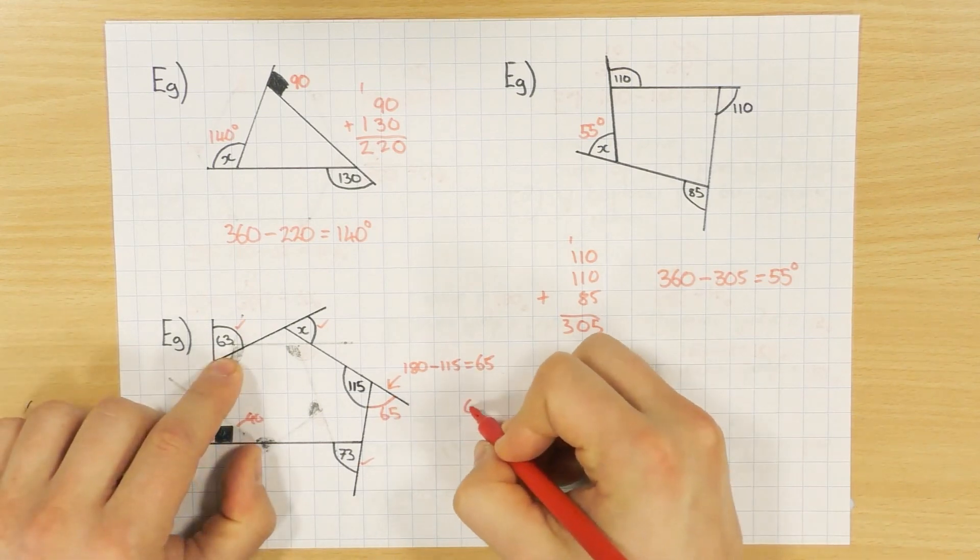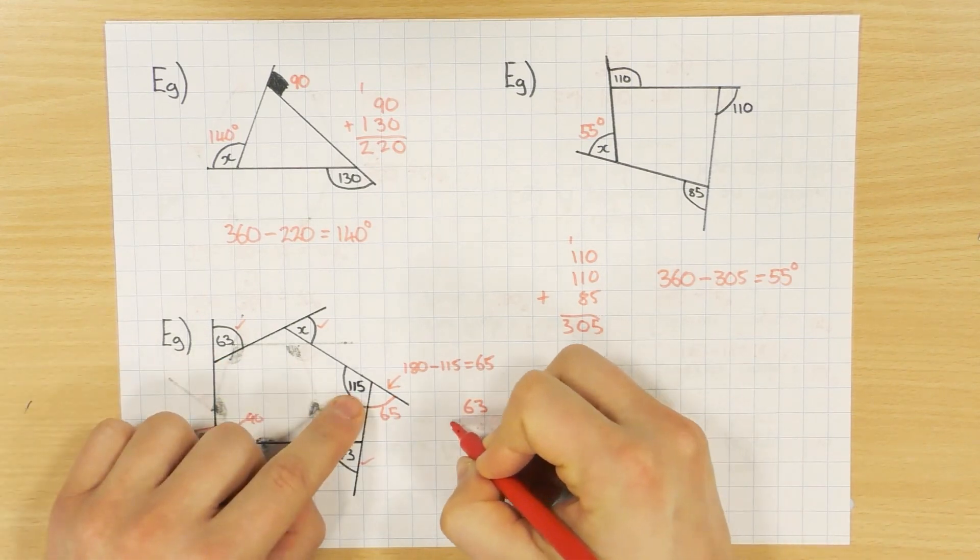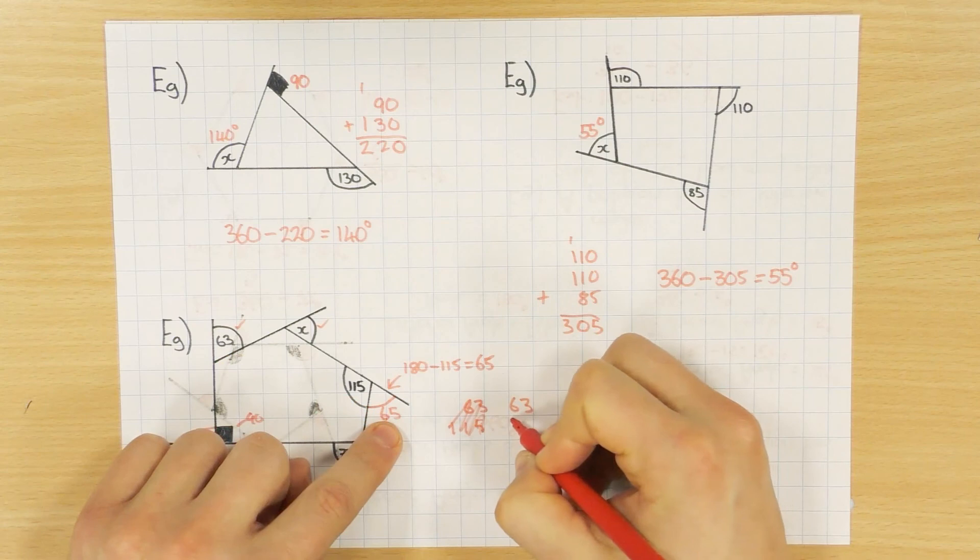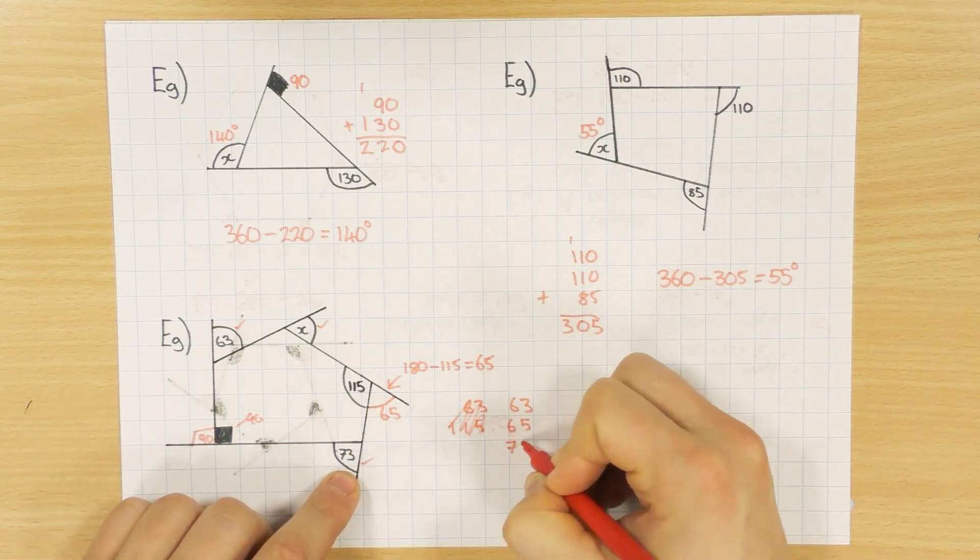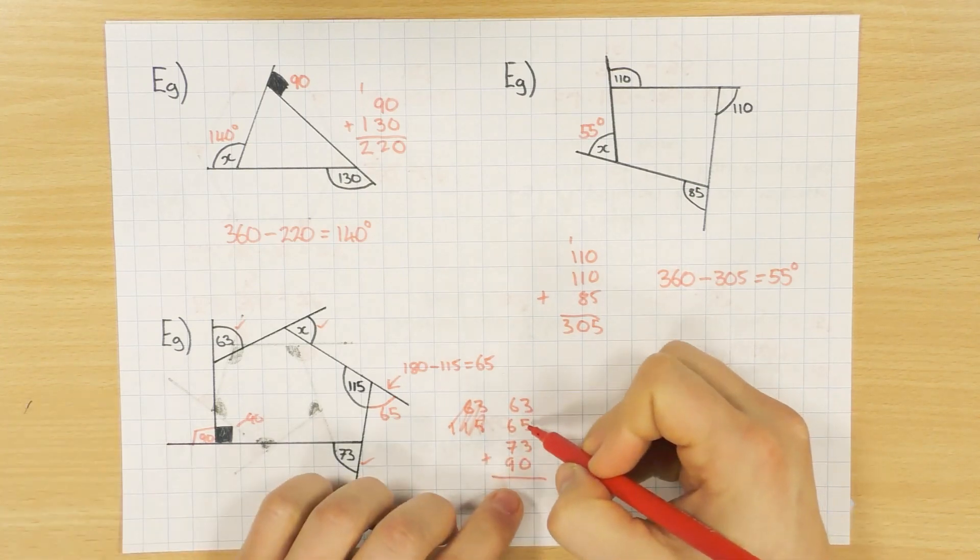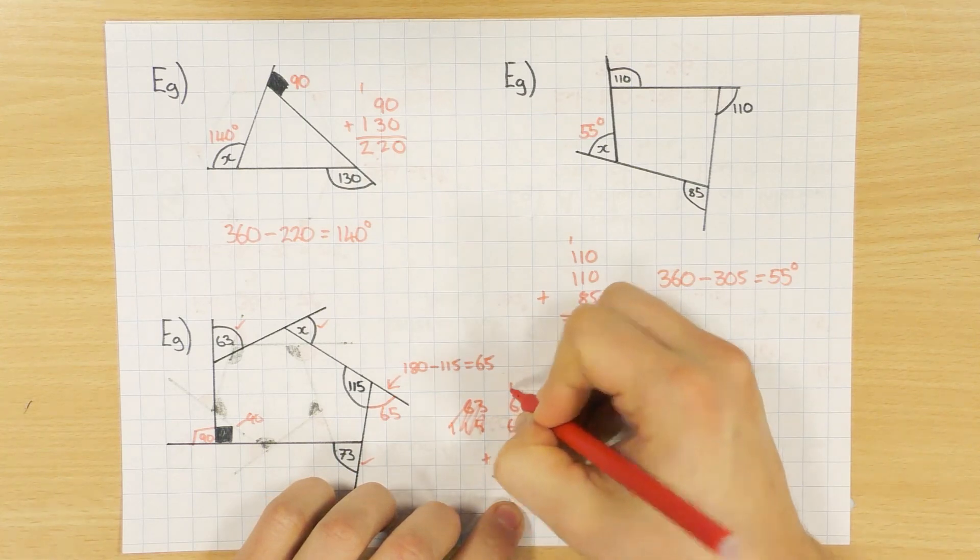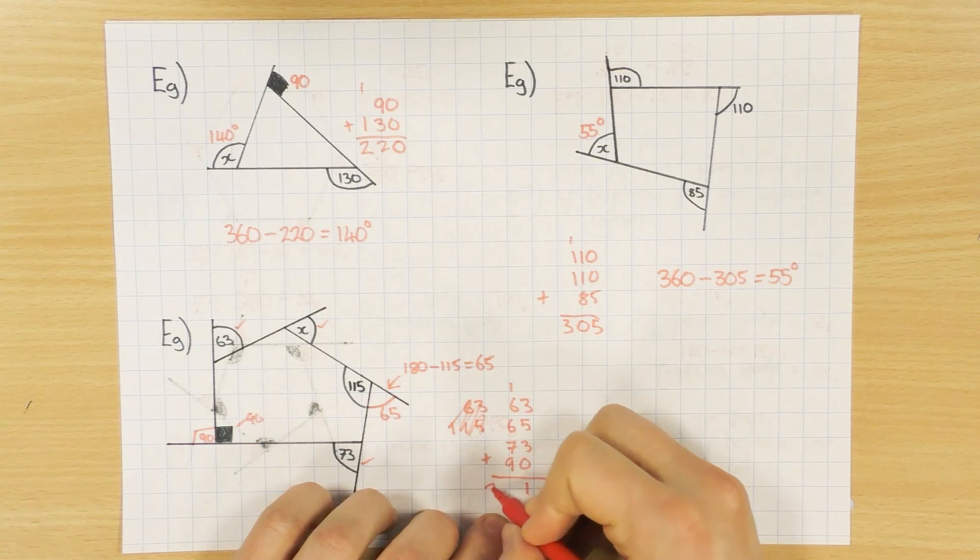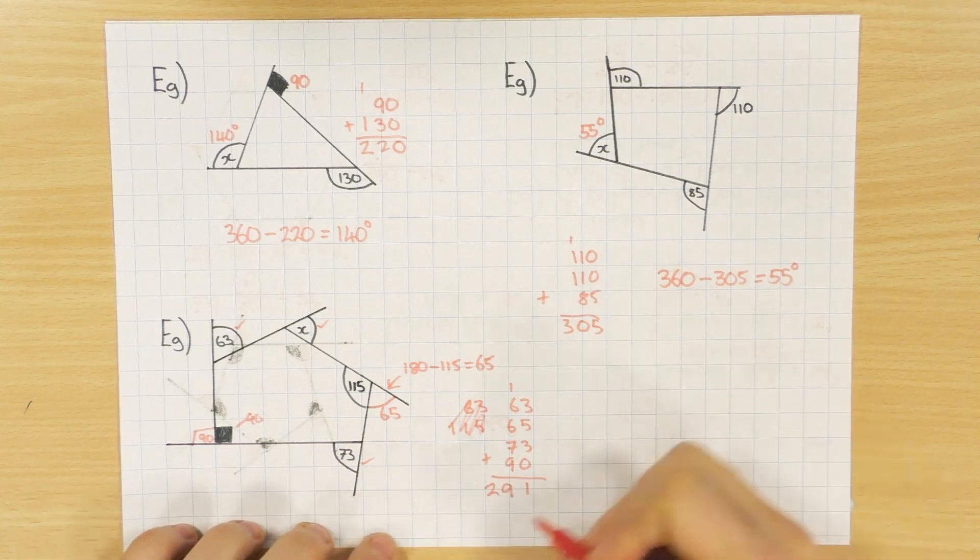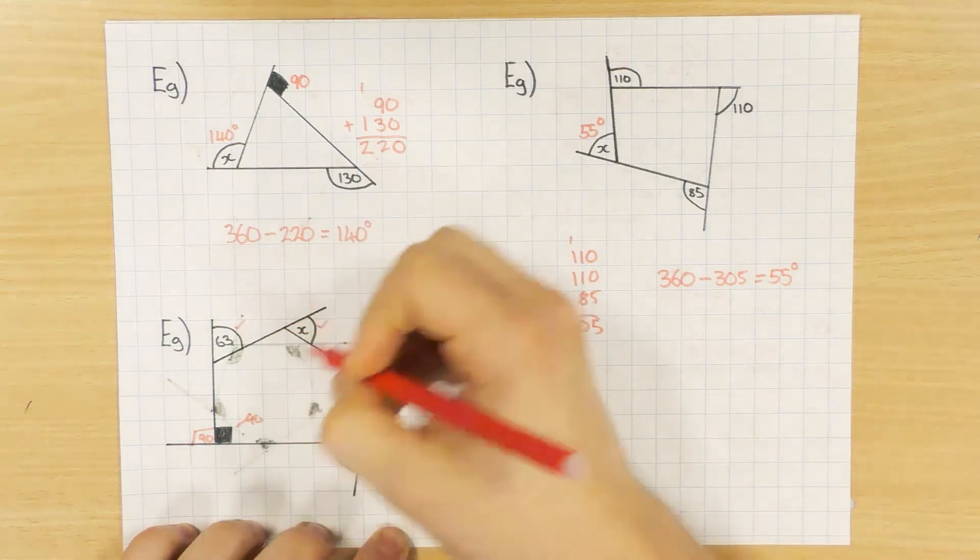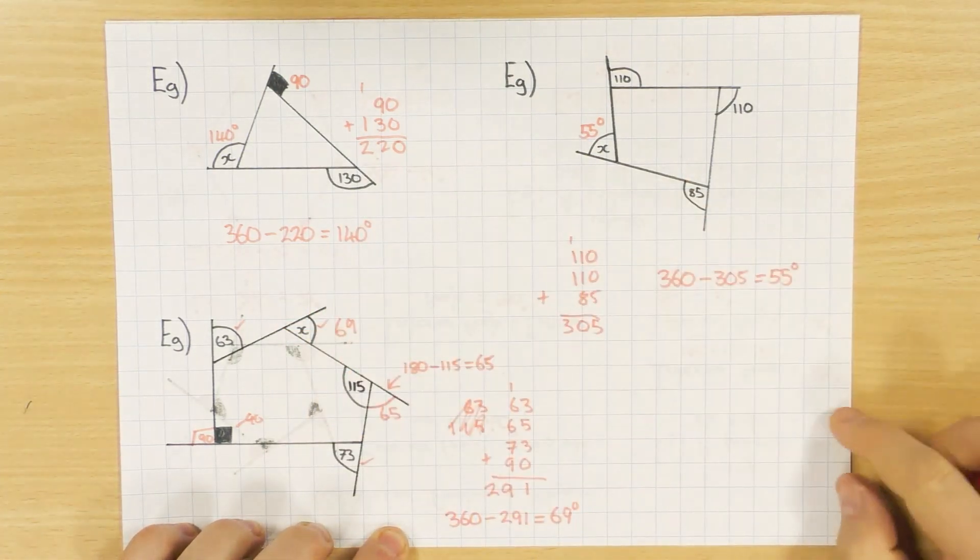Make sure you do just check they are all exterior. And then you just do the same thing. Add them all up. So 63, 65, 73, and then my 90. So 3 add 5 is 8, add the 3 is 11. So 291. I can just do my trick of 360 degrees minus what I've got, which will leave me with 69 degrees. So X there is 69 degrees.